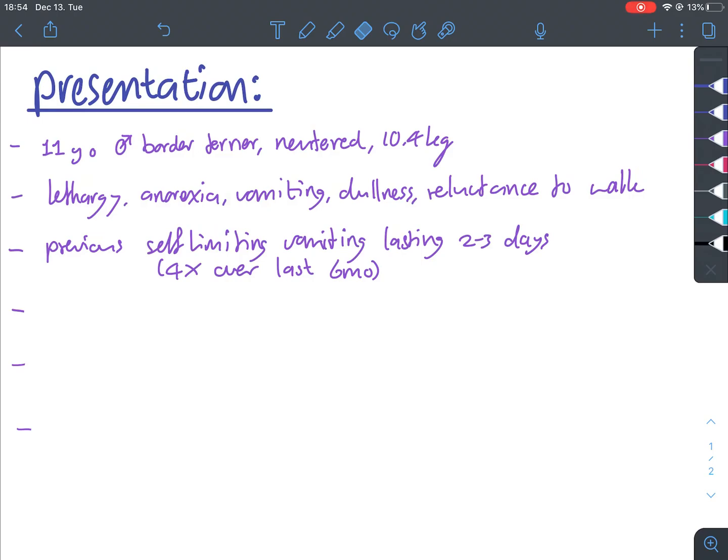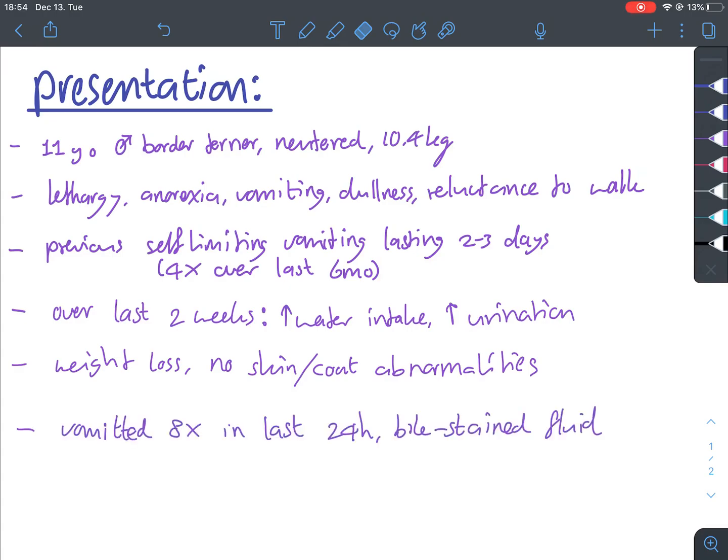There's a previous history of self-limiting vomiting lasting two to three days, which happened four times over the last six months. Over the last two weeks, the owners noticed an increase in water intake and urination. There's weight loss, but no skin coat abnormalities. The dog has vomited eight times in the last 24 hours, vomiting up bile-stained fluid.